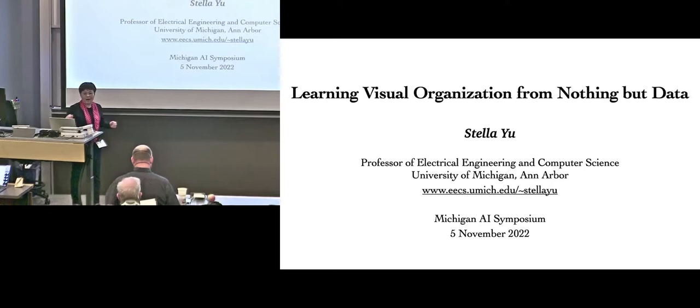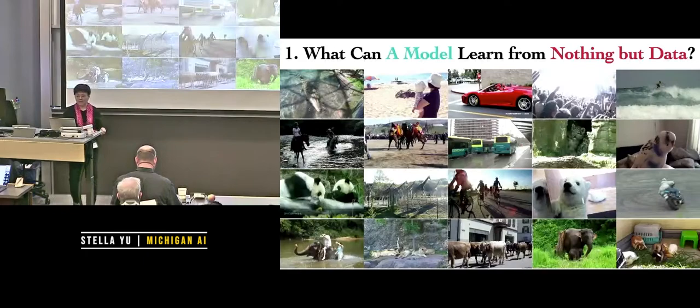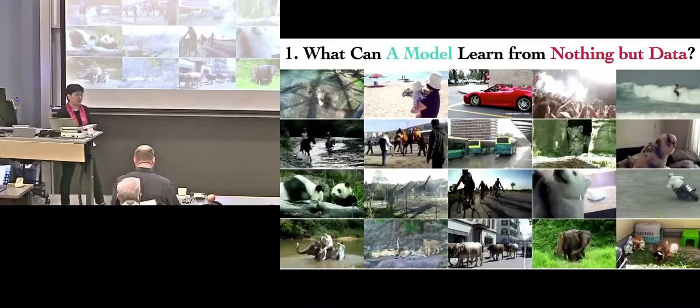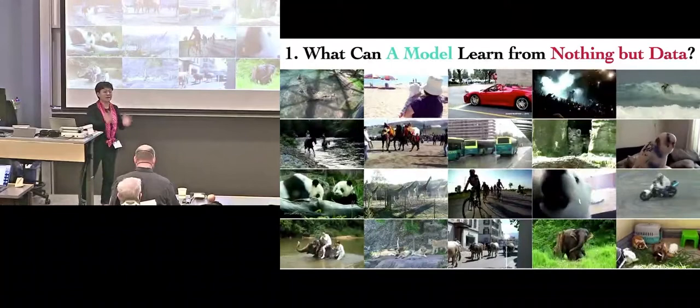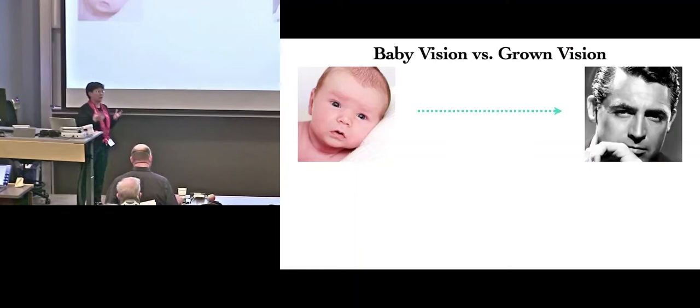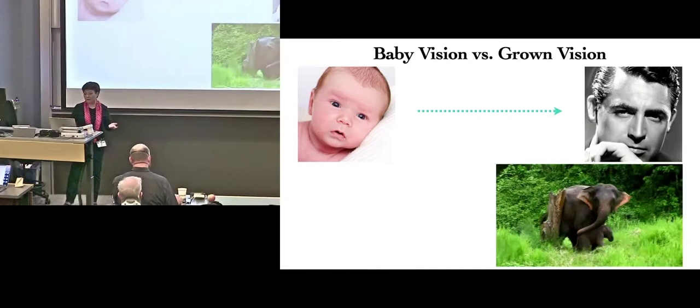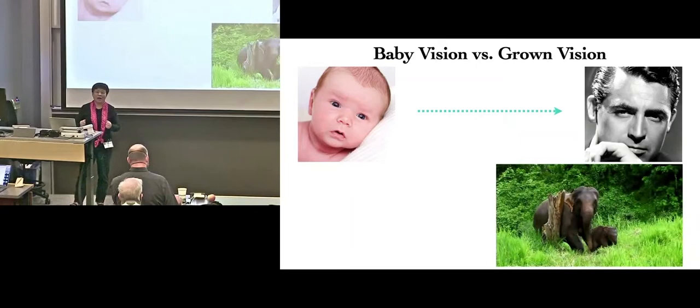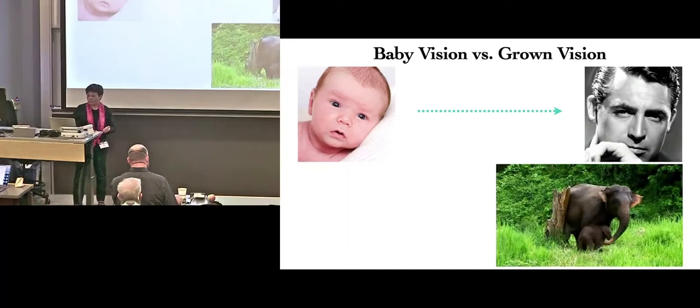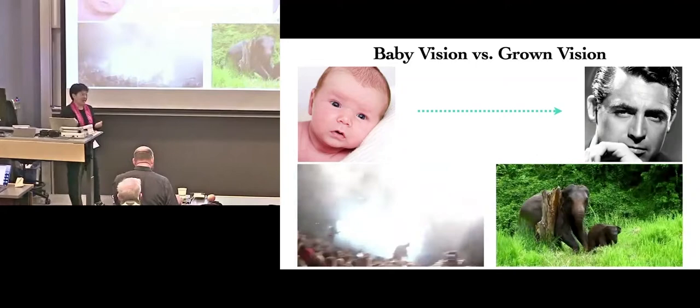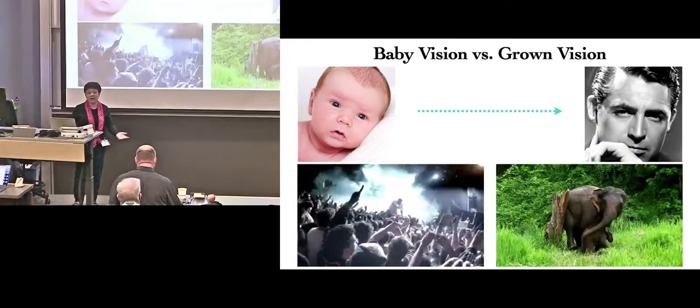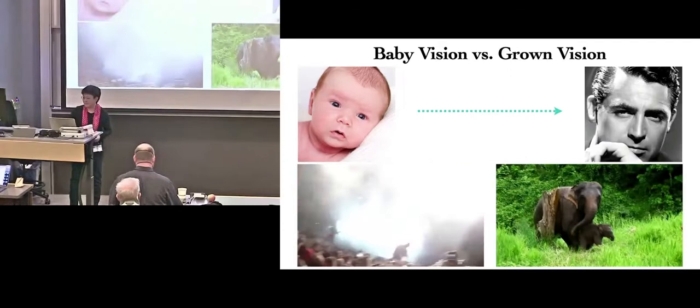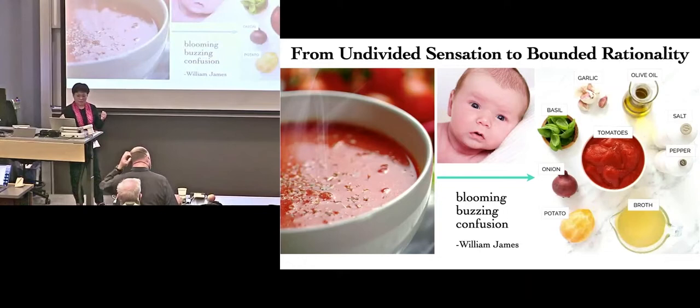So today I want to talk about learning visual organization from nothing but data. How can a model learn? What can a model learn from nothing but data like these unlabeled videos? No one tells you what's in each video. To our grown vision, every video is so simple. For example, this one, you see brown elephants against green grass. You can easily grasp what's in the scene. But I have to ask you to imagine what a baby is facing.